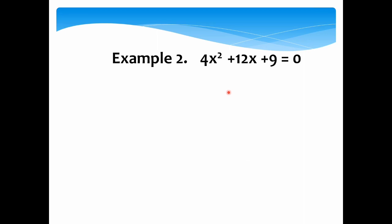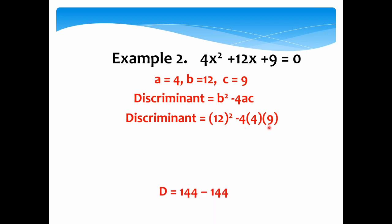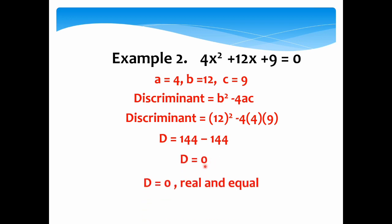Let's proceed to example number 2. We have 4x squared plus 12x plus 9 equals 0. The value of a is 4, b is 12, and c is 9. The discriminant equals b squared minus 4ac. Substituting, we have 12 squared minus 4 times 4 times 9. Simplifying, d equals 144 minus 144, which is equal to 0. Since d equals 0, the roots are real and equal.